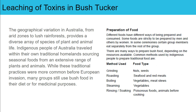In terms of preparing food, there were different ways that Indigenous people prepared their food: grinding, roasting, boiling, steaming, and rinsing. This was especially important to make sure food was prepared correctly, because some substances, if prepared in the right way, were no longer poisonous to the people eating them.